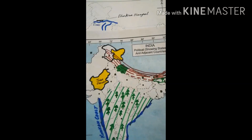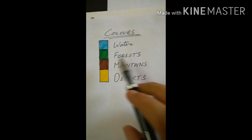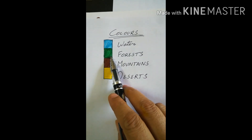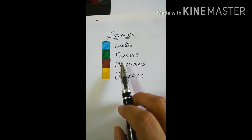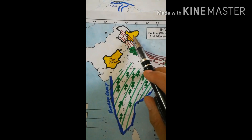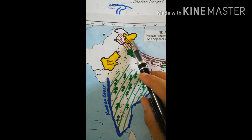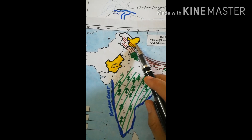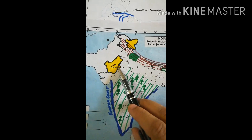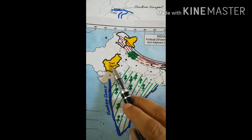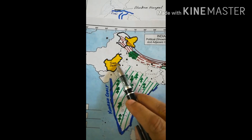Now the next topic is colors. Blue color represents water. Green color shows forest. Brown color shows mountains. And deserts are shown with yellow color. Here you can see this yellow color — this is Ladakh. Yes, dear students, we have a desert in Ladakh as well.